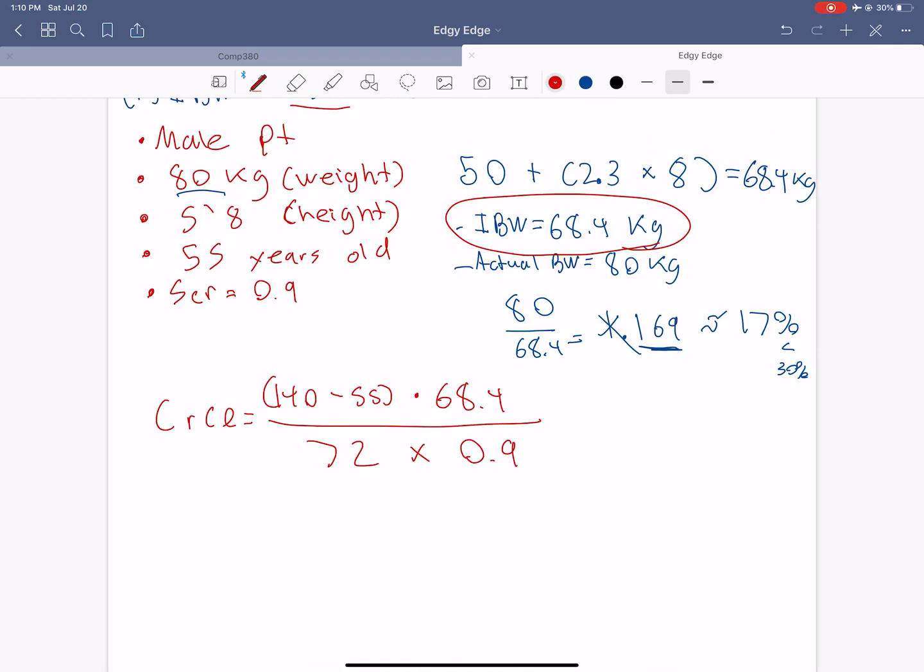So let's do a quick calculation and see what this creatinine clearance is. So we have 140 minus 55 times 68.4, divided by 72, and divided by 0.9. So we have a creatinine clearance of 89.7 milliliters per minute. And there you go.